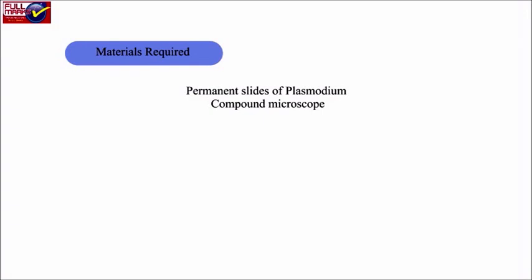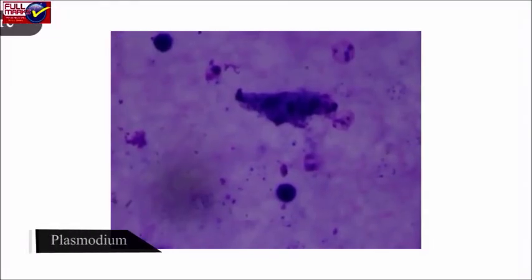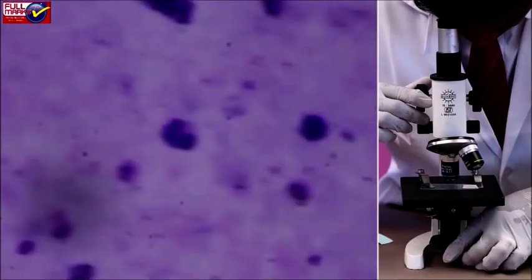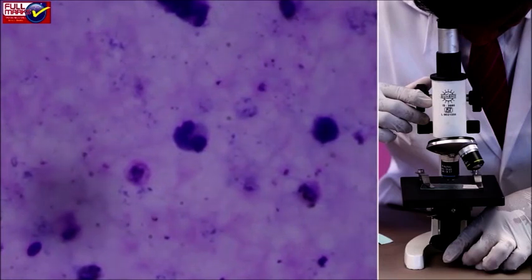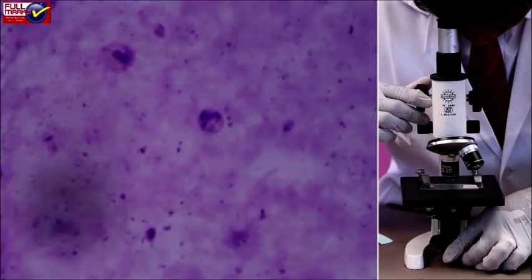Materials required: Permanent slides of Plasmodium and compound microscope. Procedure: Plasmodium vivax is a protozoan parasite causing malaria in humans. Observe the permanent slide of Plasmodium under compound microscope. Note down the features of organism in the practical record book. Draw a well labeled diagram of Plasmodium observed.